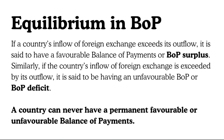If a country's inflow of foreign exchange exceeds its outflow, it is said to have a favorable Balance of Payments — a BOP surplus. We are getting more foreign exchange than we are sending out, which is good. Similarly, if the country's inflow of foreign exchange is exceeded by its outflow, it has an unfavorable BOP — a BOP deficit. Simply put: if you are getting more than you are spending, it is surplus; if you are spending more than you are getting, it is deficit.